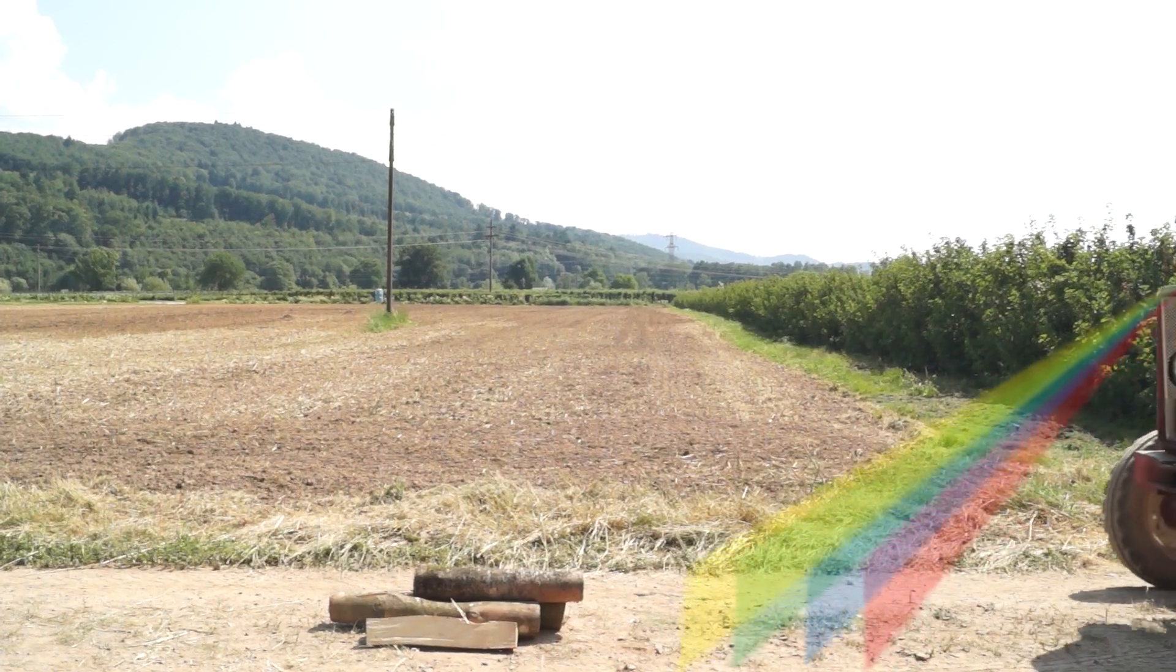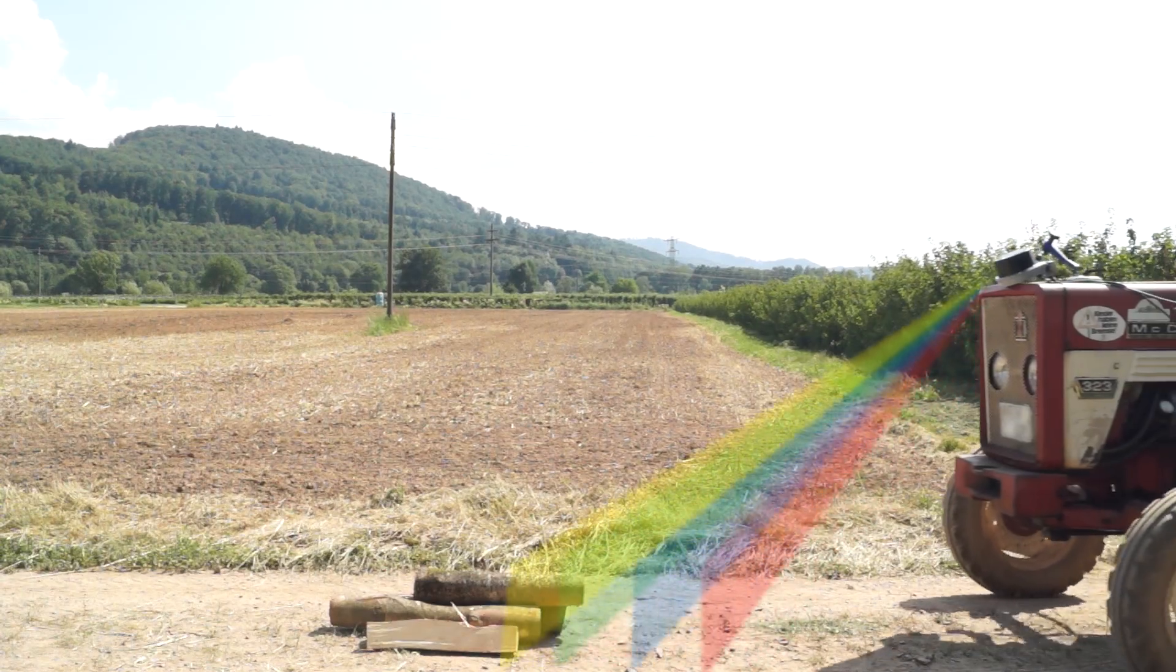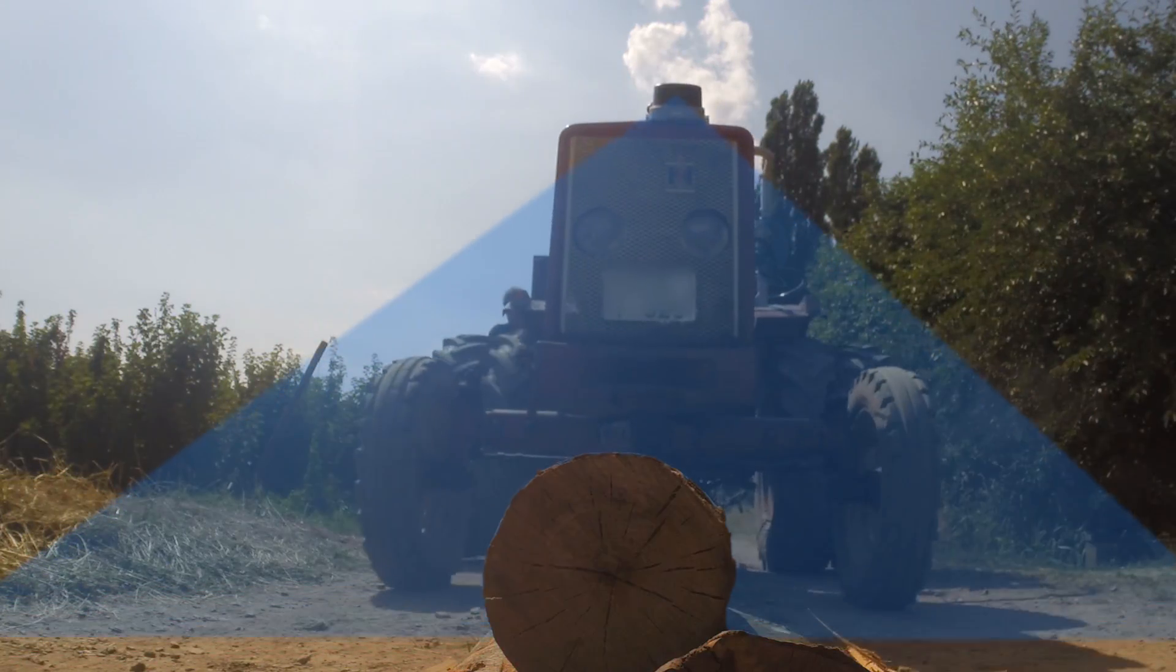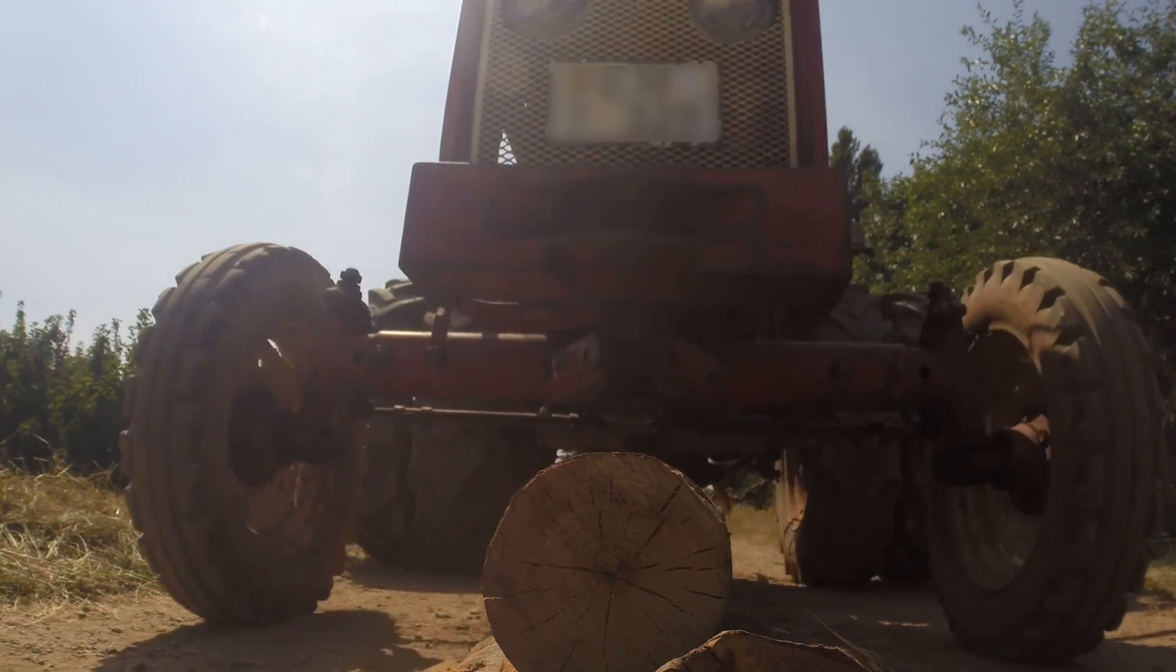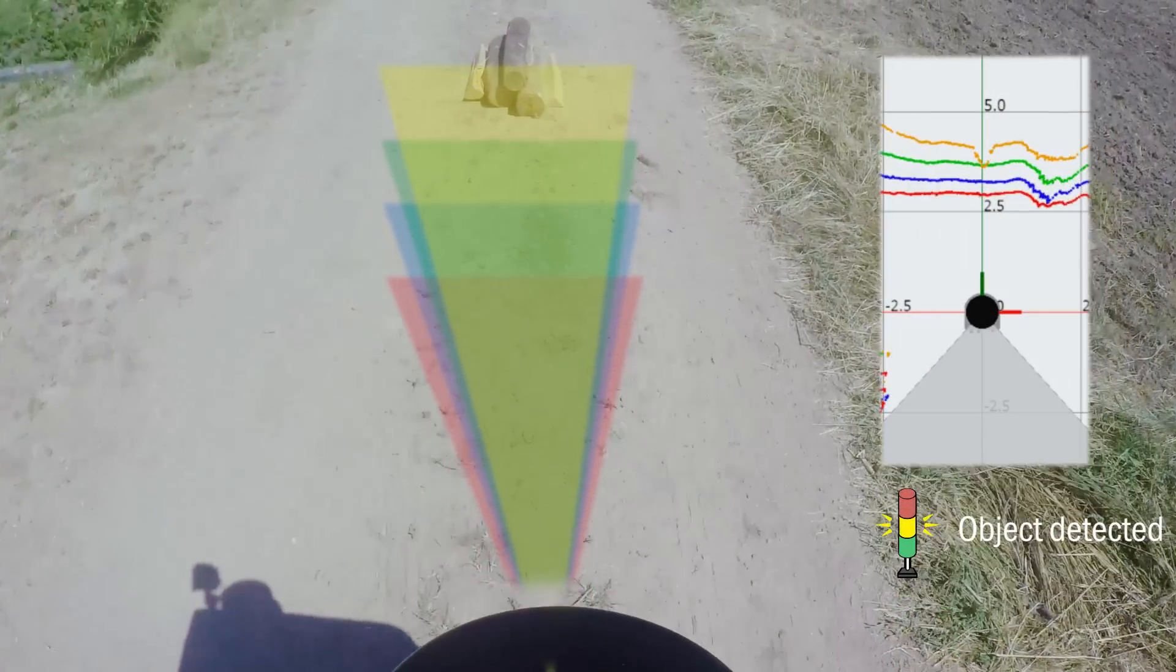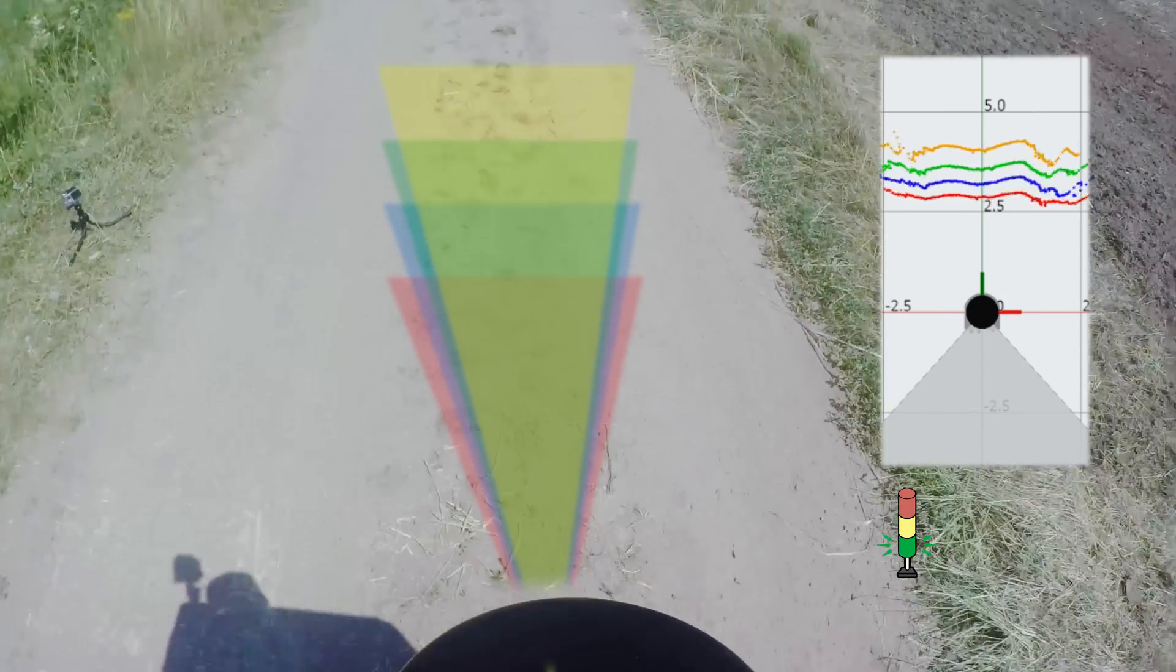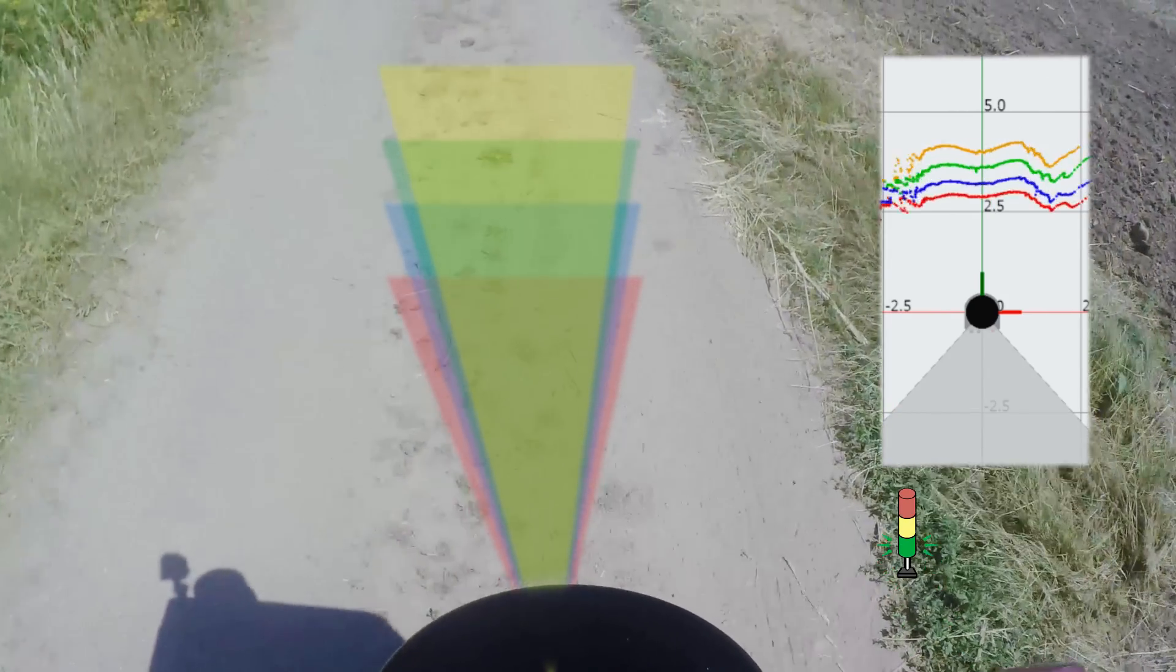The MRS1000 can ignore unwanted reflections while the sensor still reliably detects objects and evaluates whether they are of harmful size for the vehicle. The MRS1000 can output measurement data to identify objects, and it is also possible to apply the advanced field evaluation provided in the sensor.